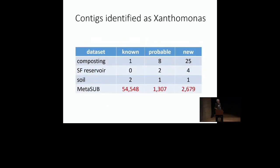In terms of dataset sizes, by number of contigs: soil is 300,000 contigs, composting a little more than a million, the reservoir a million and a half, and MetaSUB 80 million — dwarfing the others in size. I found no Xanthomonas in some of the other datasets I listed, so I focused on these four. The vast majority of contigs are less than 10 kb, and the largest MetaSUB contig is about 160 kb.